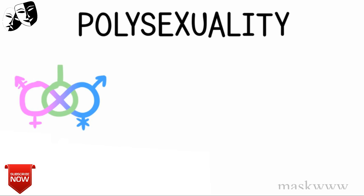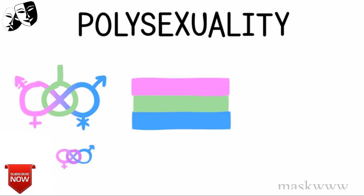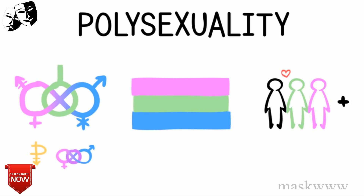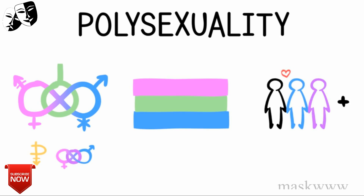5. Polysexuality. Polysexuality refers to people who are attracted to two or more genders. Typically, bisexuality and pansexuality are types of polysexuality, though not all people who are polysexual use these terms.